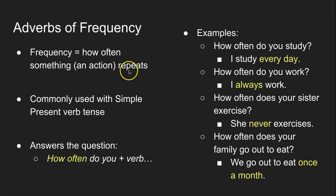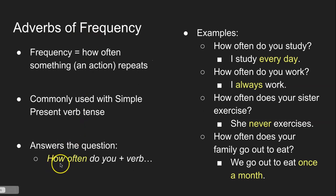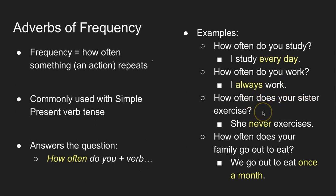Because it's something that repeats, adverbs of frequency are very commonly used with the simple present verb tense, because the simple present talks about habits — the things that repeat. Adverbs of frequency answer the question 'how often.' For example: How often do you study? I study every day. How often do you work? I always work. How often does your sister exercise? She never exercises. How often does your family go out to eat? We go out to eat once a month.